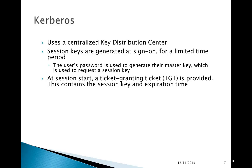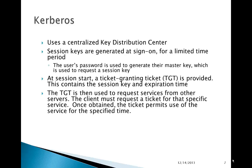At session start, the ticket-granting ticket (TGT) is provided. It contains a session key and an expiration time — you're given a ticket from the key distribution center saying you are who you say you are, here's your cryptographic key for all transactions during your session, and here's when it will expire. The TGT is then used to request services from other servers without using your password again. You request a ticket for a specific service — that's why it's a ticket-granting ticket. The TGT grants a service ticket for a much shorter time, say 5 to 10 minutes, for a specific service like a mail server. Then you use the TGT to get another one when needed.